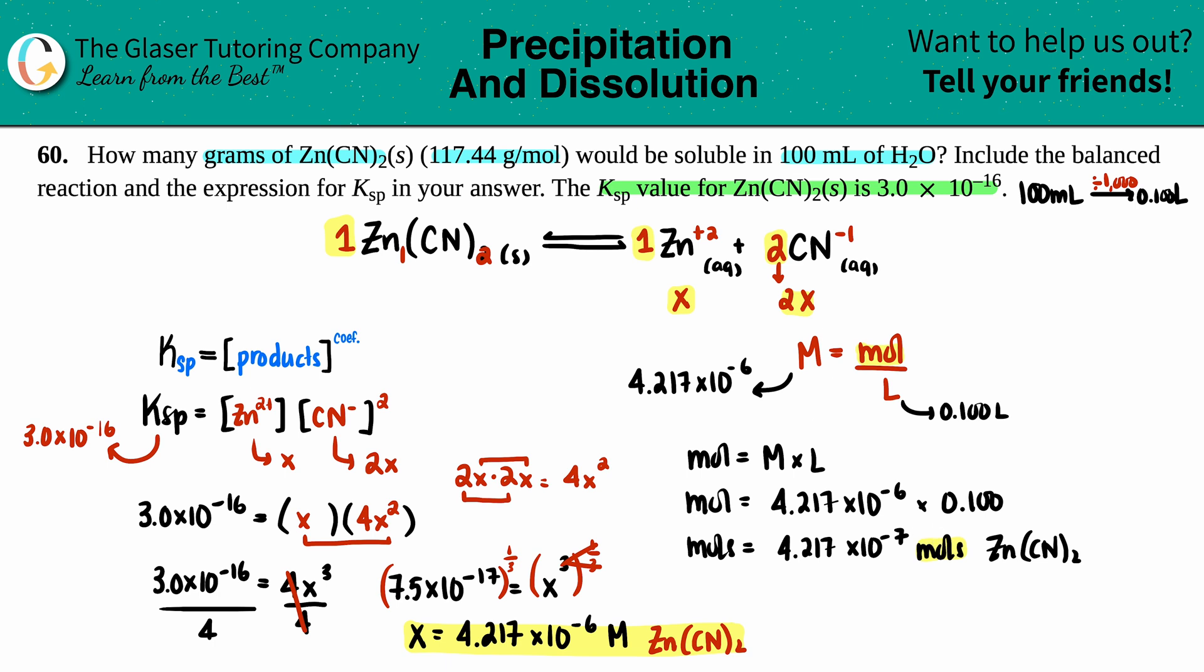To go from moles to grams, multiply by the molar mass. They gave us that value, so I take 4.217 times 10 to the negative 7th and multiply by 117.44. That gives 5.0 times 10 to the negative 5th grams.